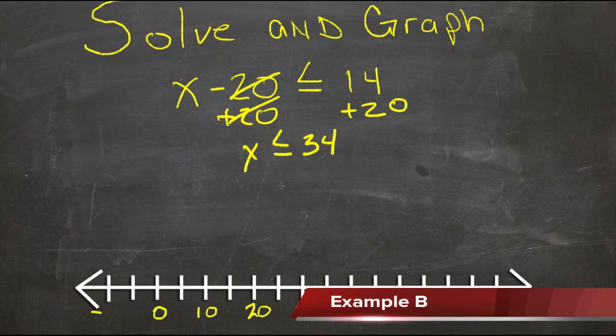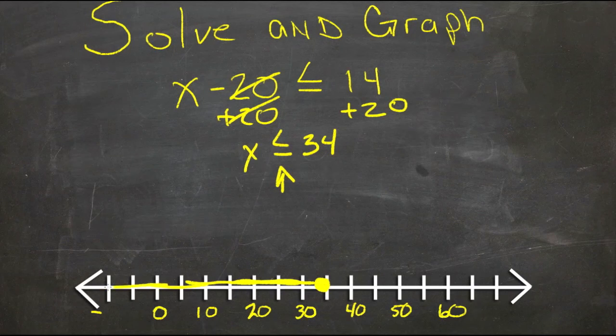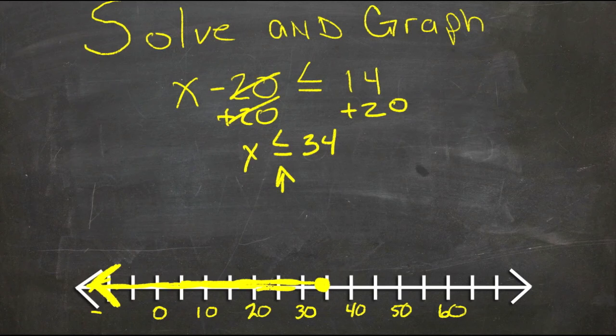Obviously the difference here between this one and the last one is that we have an equal to. So we'll find 34 on our graph here, something about here. And instead of drawing an open circle, we'll fill it in showing that 34 is also included. Then we'll shade to the left since x is anything at 34 or smaller, less than or equal to 34.